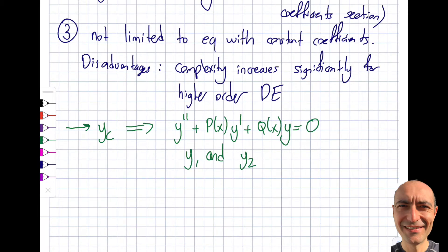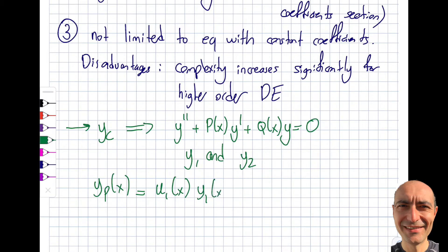It's not usually a good idea to memorize an approach, but this is one instance where it makes sense — the derivation is very lengthy and you won't have time in an exam setting. So I recommend memorizing what I'm about to write. The particular solution Y_P(x) is: Y_P = u_1(x)·y_1(x) + u_2(x)·y_2(x), where y_1 and y_2 are solutions to the homogeneous equation. The name of the game is finding u_1 and u_2, and this is where the Wronskian comes in for linearly independent solutions.